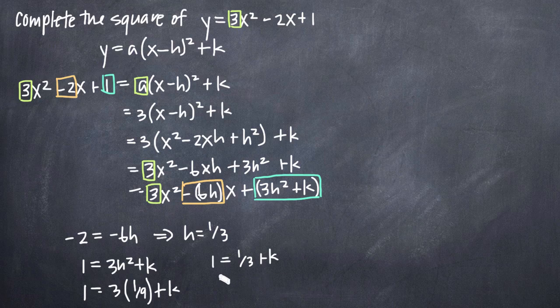Subtracting 1 third from both sides, we'll see that we get k is equal to 2 thirds. Now, we have a value for h and k and we can go ahead and plug them into this format here.